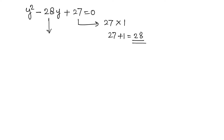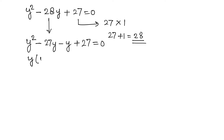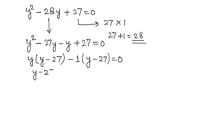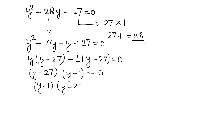Splitting the middle term: y² − 27y − y + 27 = 0. Taking y common from the first two terms gives y(y − 27), and taking −1 common from the last two terms gives −1(y − 27). So we get (y − 1)(y − 27) = 0, giving two solutions: y = 1 and y = 27.